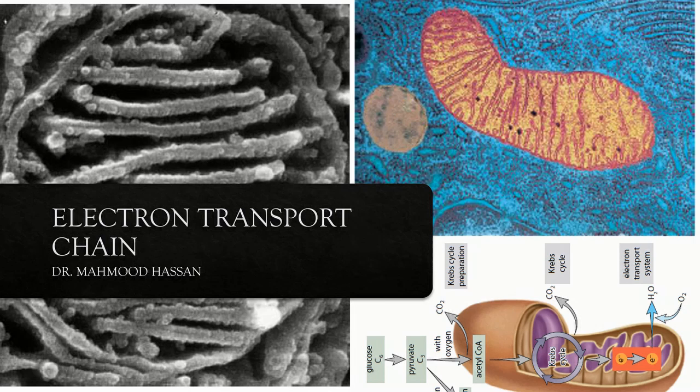We have already discussed glycolysis and Krebs cycles in our previous videos. Your feedback on those videos was very positive, and your appreciation has led me to make another video which is the third and final step that ultimately leads to ATP formation inside mitochondria. This is called electron transport chain.